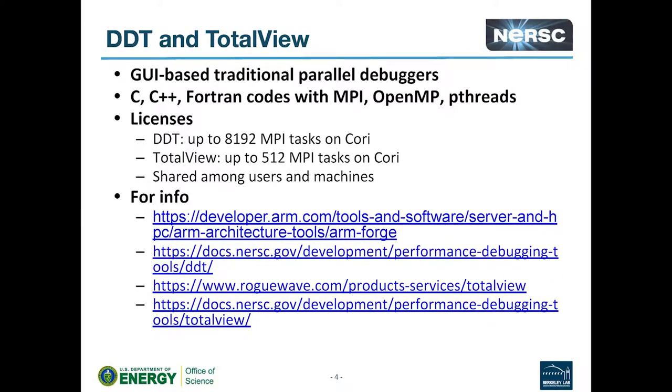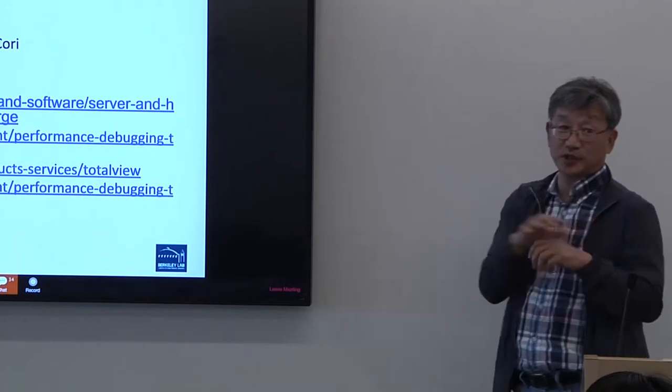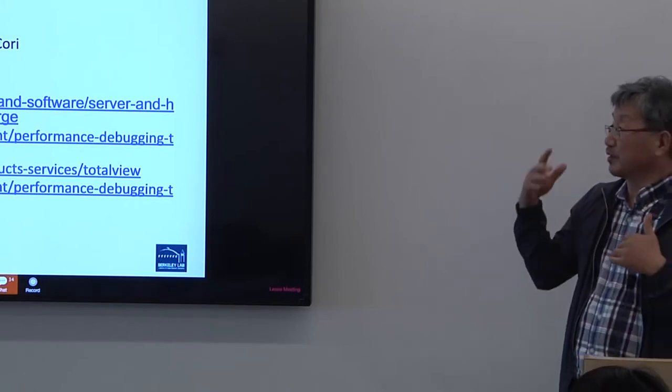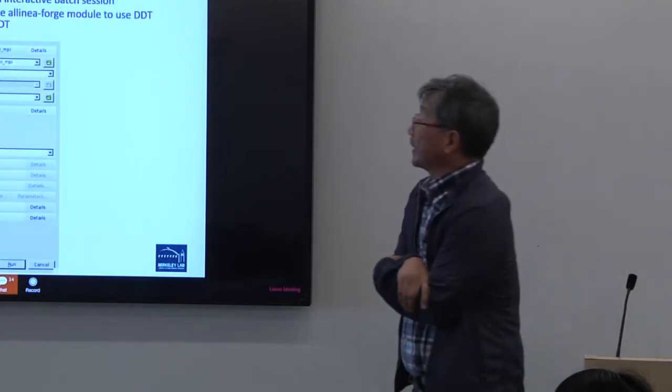So DDT and TotalView, as I said, this is a traditional parallel debugger. It can be used with C, C++, Fortran, MPI, OpenMP, Pthreads, et cetera. DDT, we can use DDT up to about 8,000 MPI tasks. But we have very small licenses for TotalView. So for debugging a large application, you have to use DDT. But the 8,000 licenses are shared among all users. If some people are using half of them, you can only run up to 4,000, for instance.